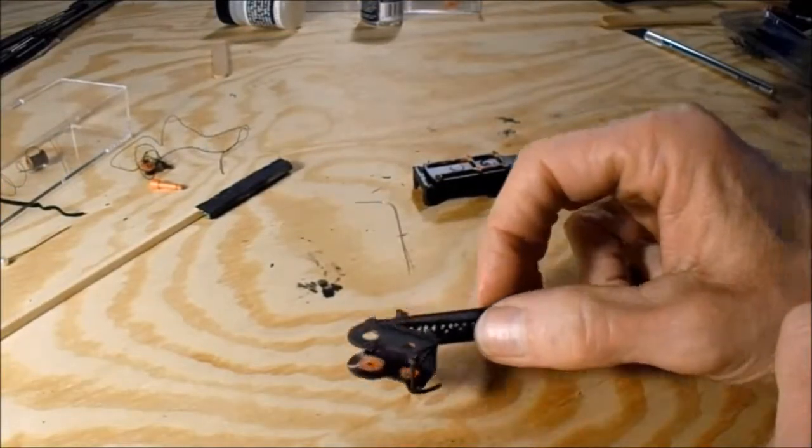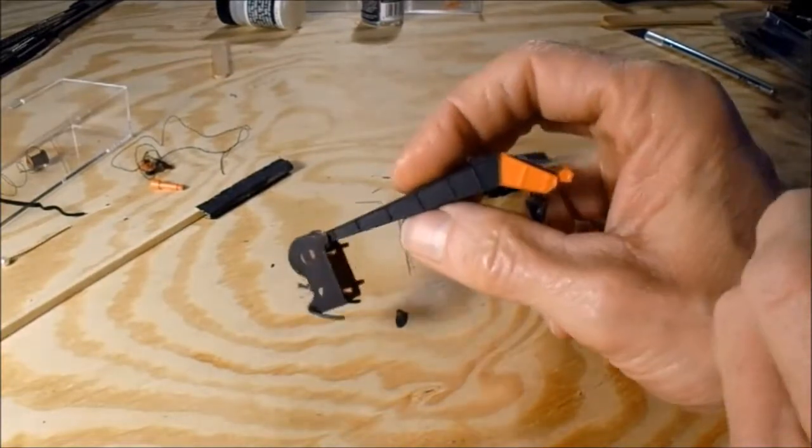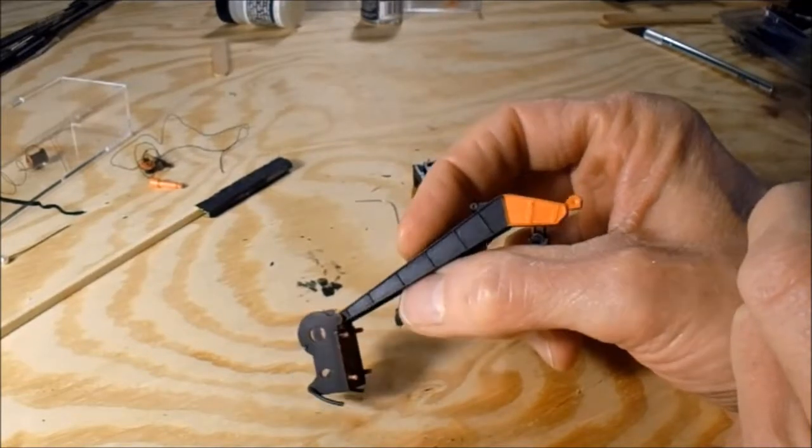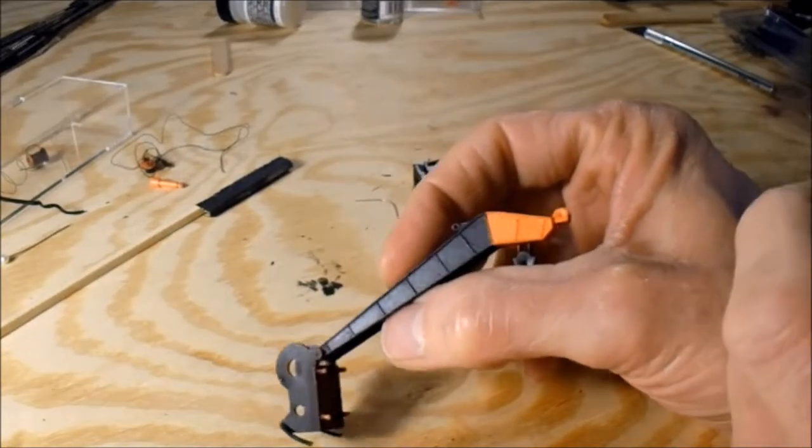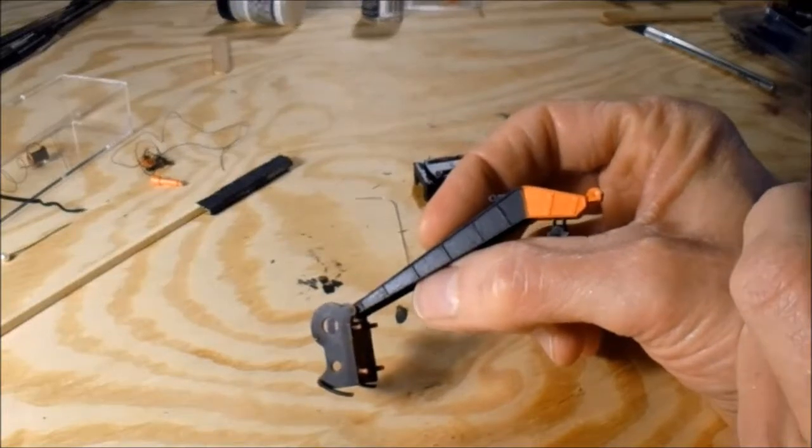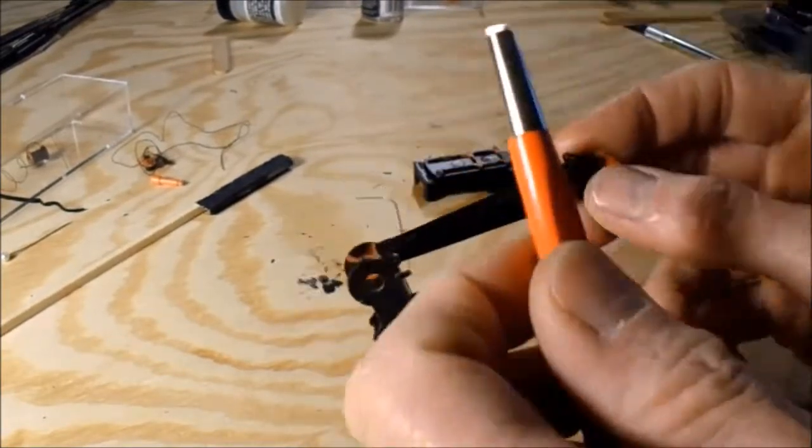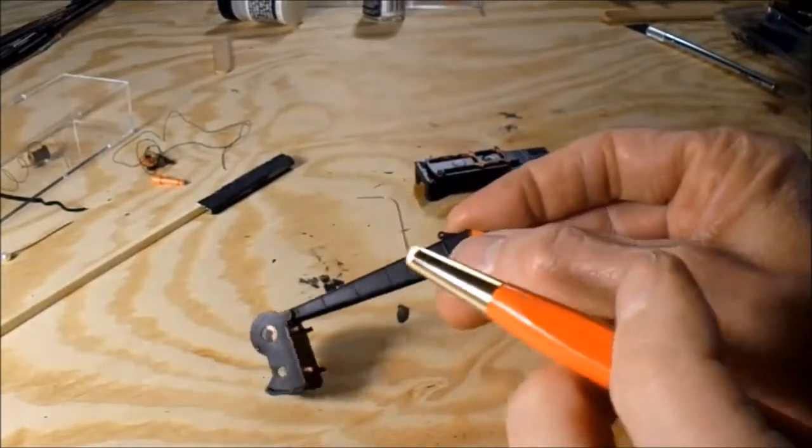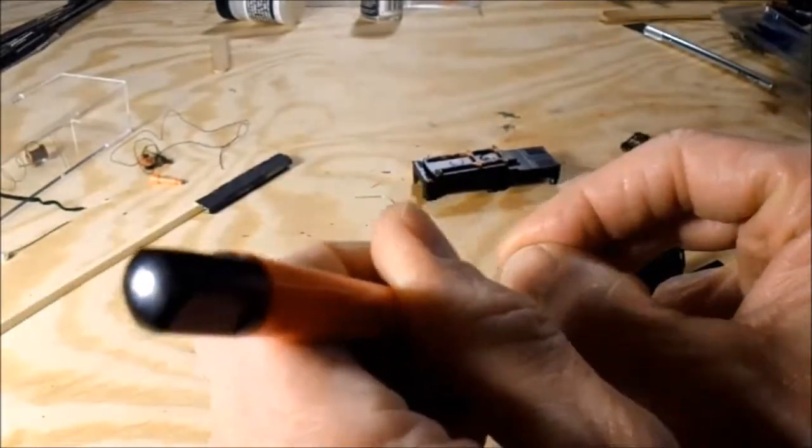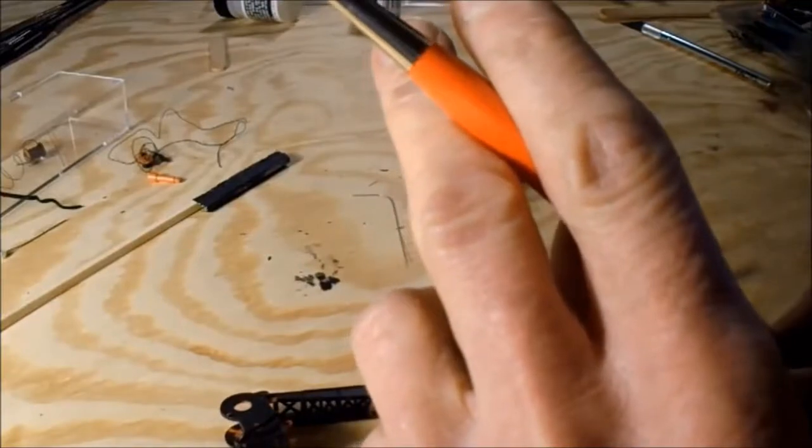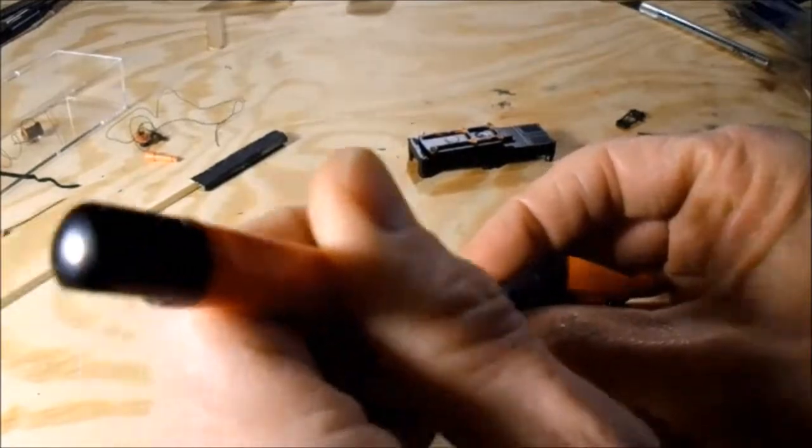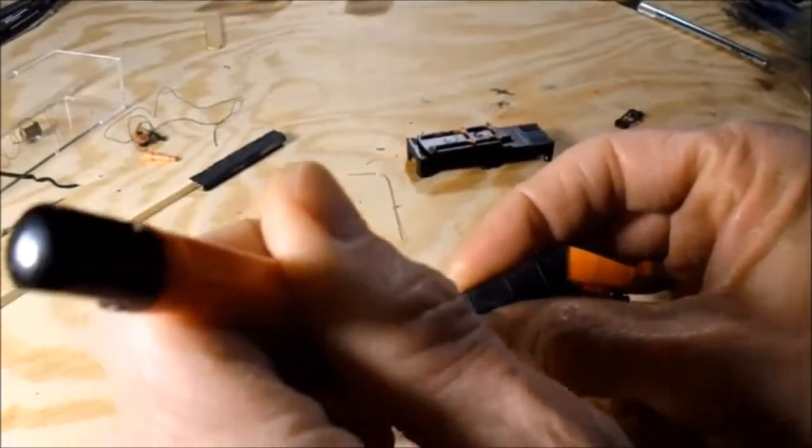All right. I sprayed my dull coat on here, what I thought was dull coat. It's apparently a matte finish, and it didn't do what I wanted it to do. It did seal the paint. But it's left a lot of gloss, and so what I'm going to do is, I'm going to take my fiberglass burnisher here, and I'm just going to go around here and rub through here. This is going to smooth it out a little bit, and hopefully break up a little bit of the gloss.